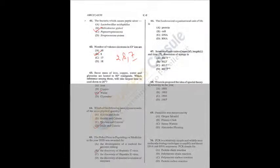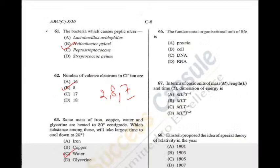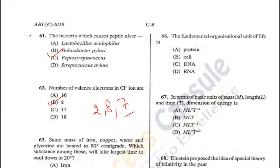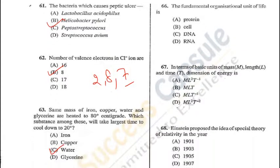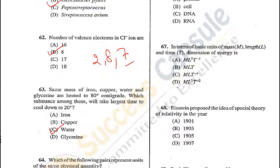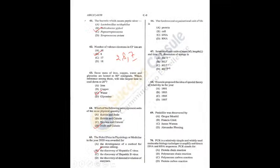Question 66: The fundamental organizational unit of life is the cell — B is the answer. Question 67: In terms of basic units of mass (M), length (L), and time (T), the dimension of energy is ML²T⁻² — option A.